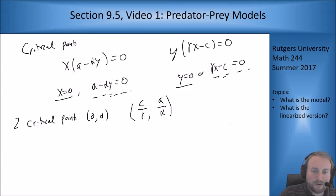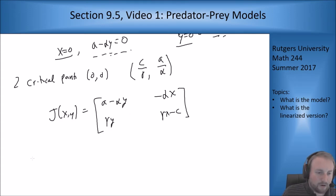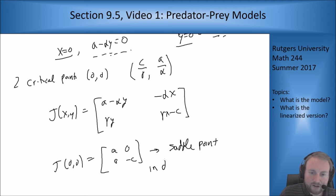Now let's look at our Jacobian matrix. So j of xy taking the derivatives gives me a minus alpha y, negative alpha x, gamma y, gamma x minus c. Now if we look at the origin we're going to look at our two critical points and see what kind of agencies we get out of them. So look at the origin j of zero zero is just going to be a zero, zero minus c.